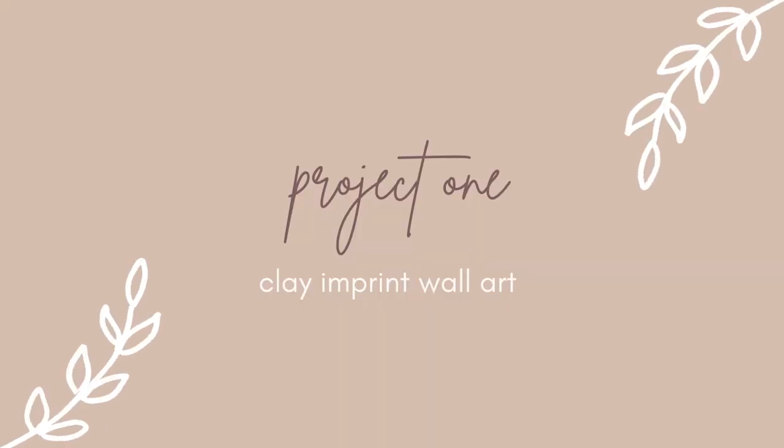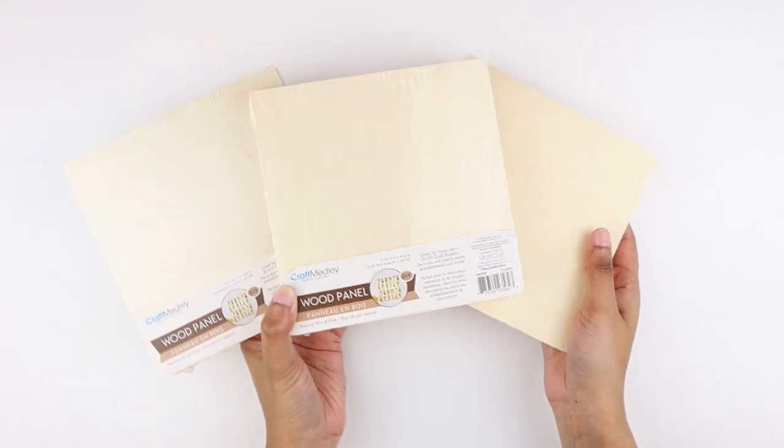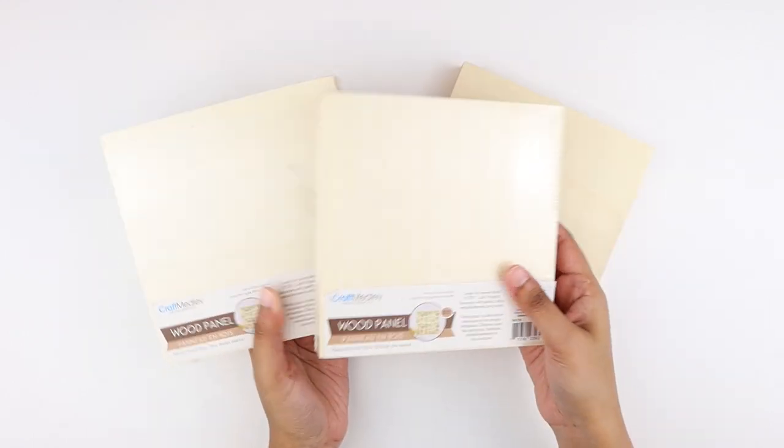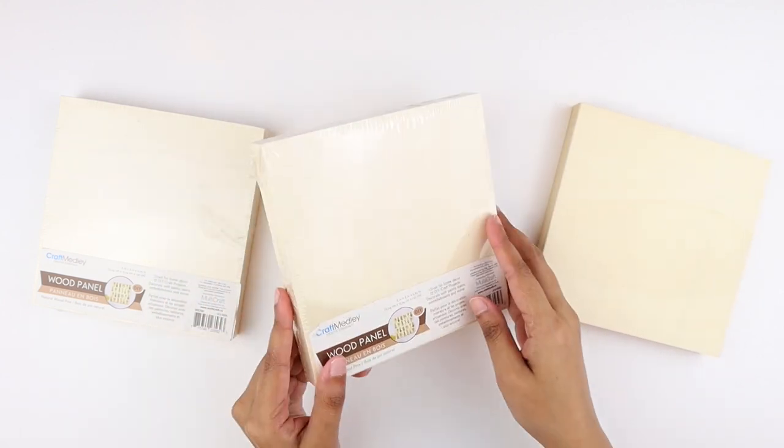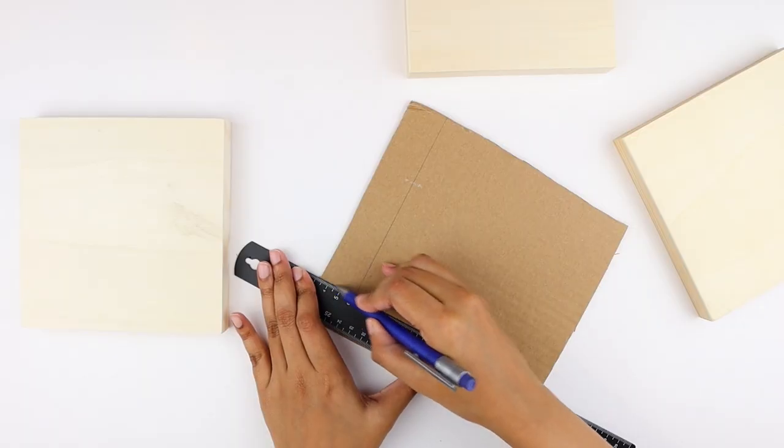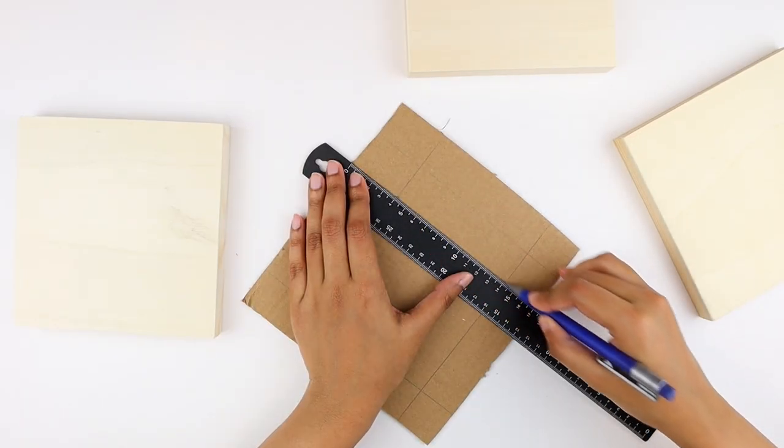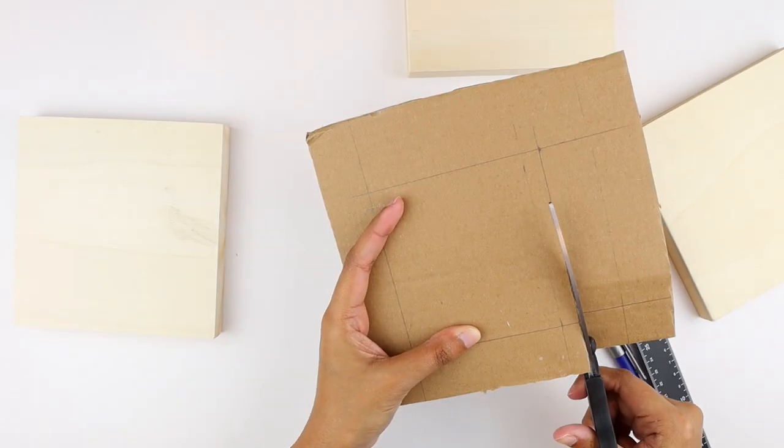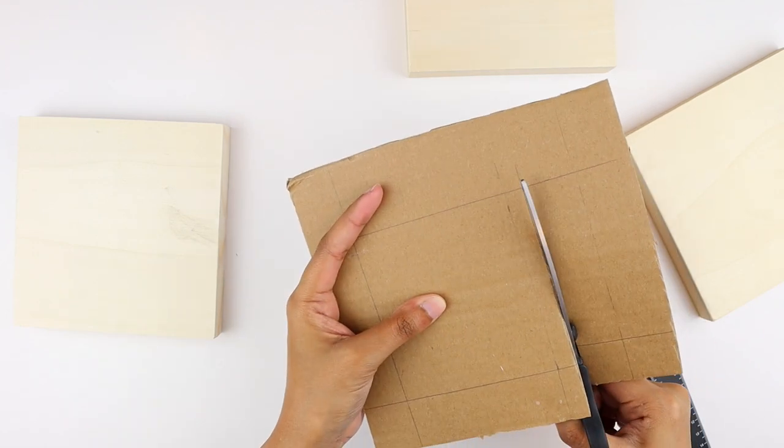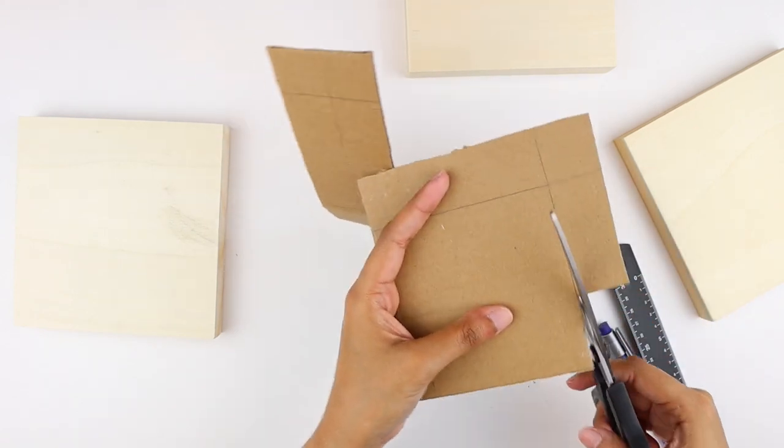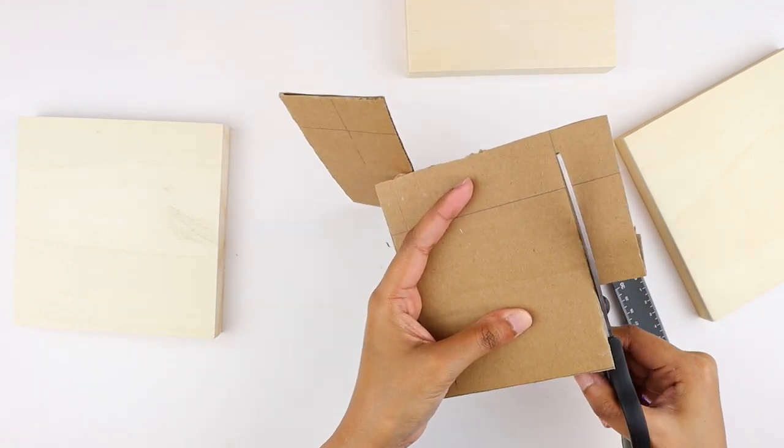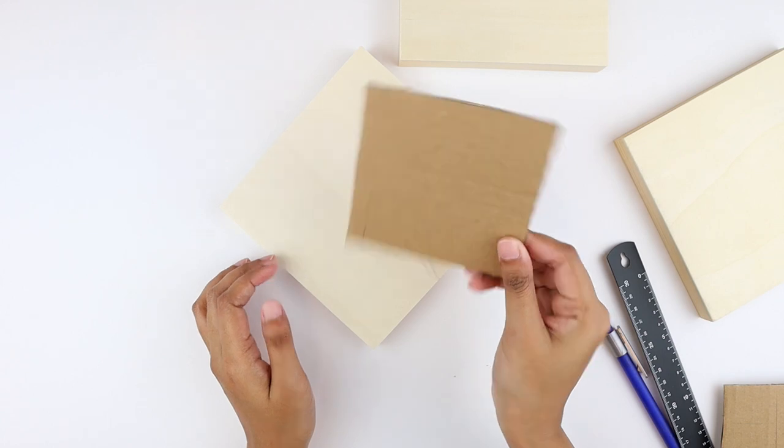For the first DIY project, I grabbed three wood panels. These are the Dollar Tree 6x6 wood panels. You can get similar pieces in craft stores or on Amazon. Then I took this cardboard piece which I used as a template. I cut a 4x4 inch square piece and kept it aside for later use. I cut the cardboard piece smaller than the dimensions of the panel, leaving a border of around two inches on all four sides.